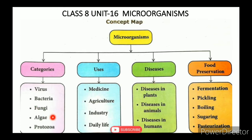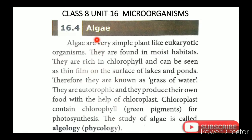Algae are very simple, plant-like eukaryotic organisms. There are two cell types: prokaryotic and eukaryotic. They are found in moist habitats. They are rich in chlorophyll and can be seen as a thin film on the surface of lakes and ponds.